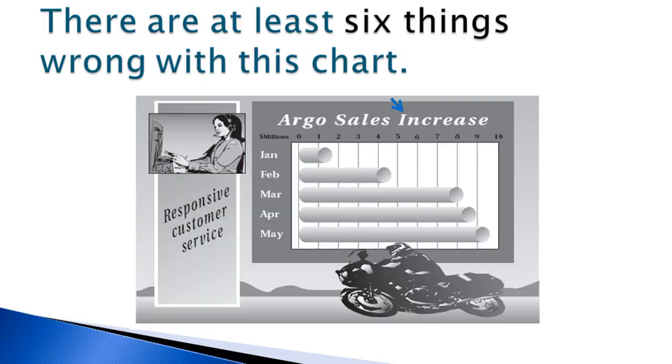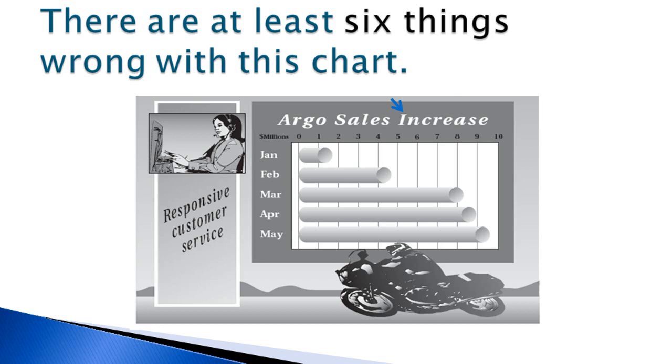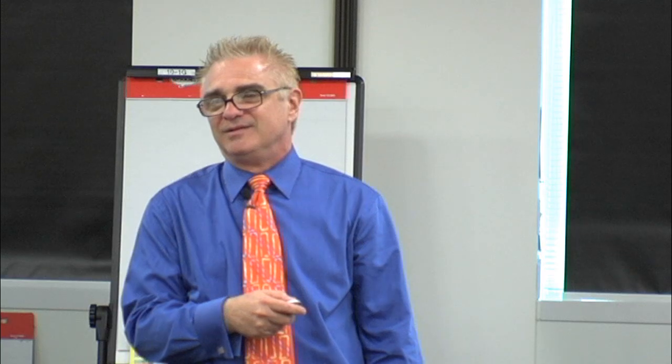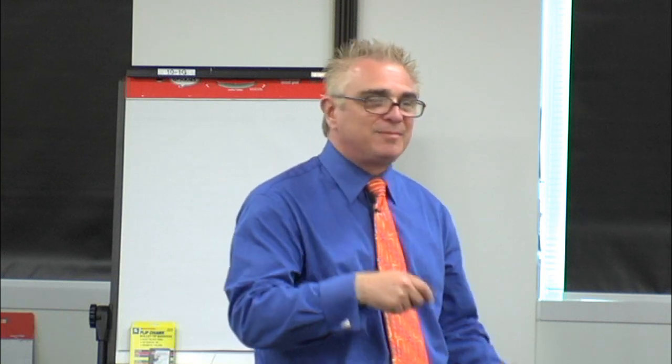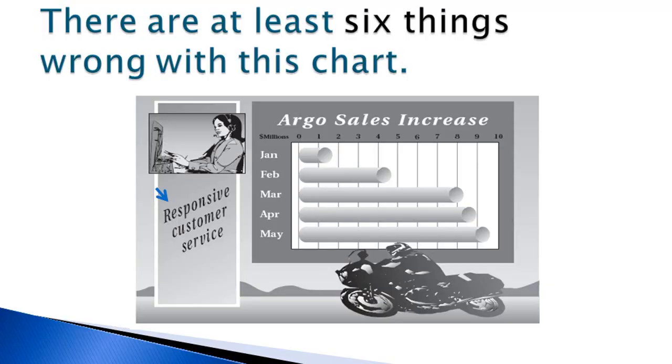Sales increase? You're implying that the data is a delta — a delta over what? This looks to me like total sales figures, so what does 'increase' mean? There was an increase from January to May — is that the story? Or are you saying that each month is an increase over some other baseline period? It's completely confusing. Are you trying to say, by juxtaposing this message with this chart, that the reason for the sales increase is customer service? That's the implication?